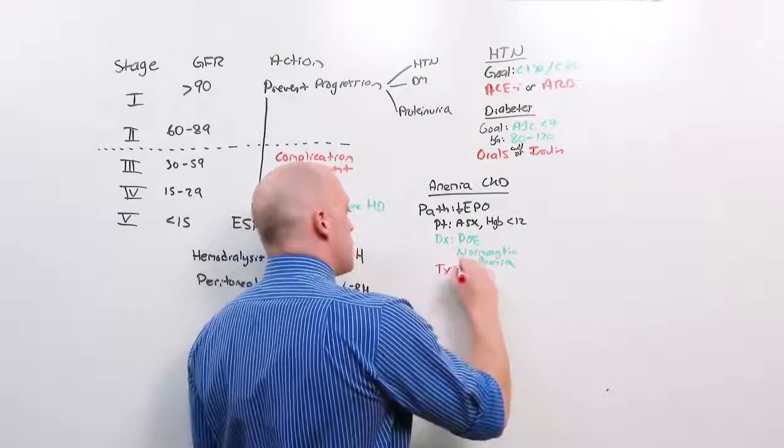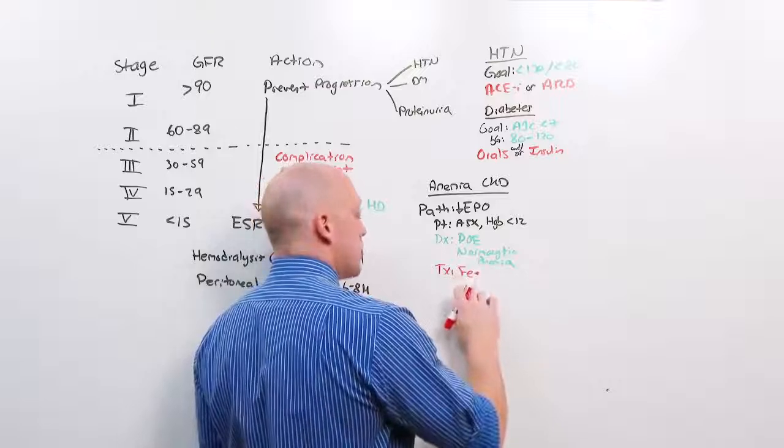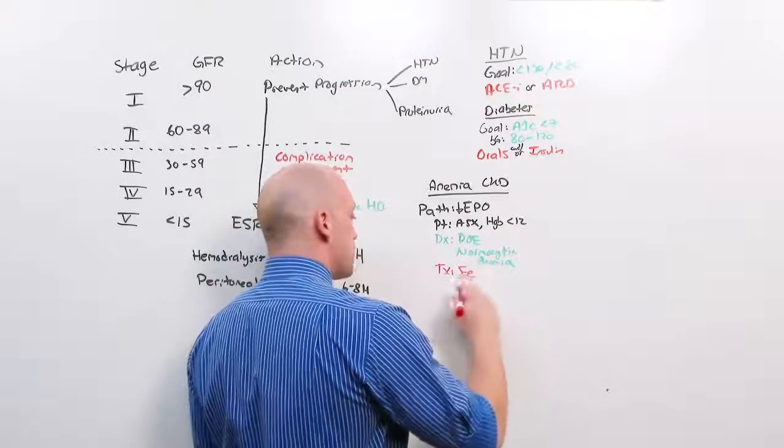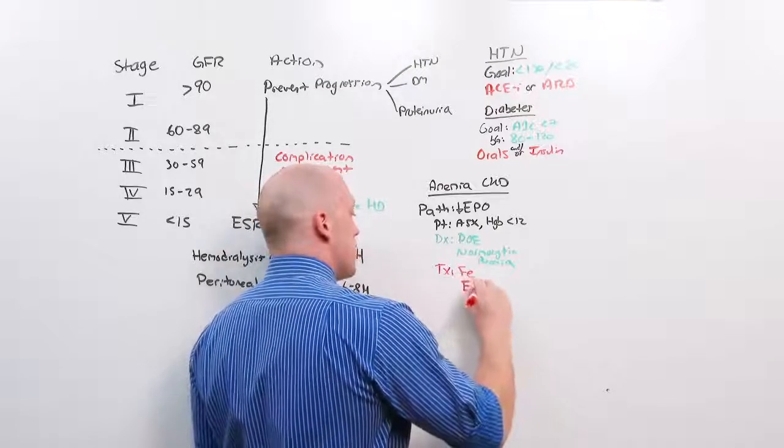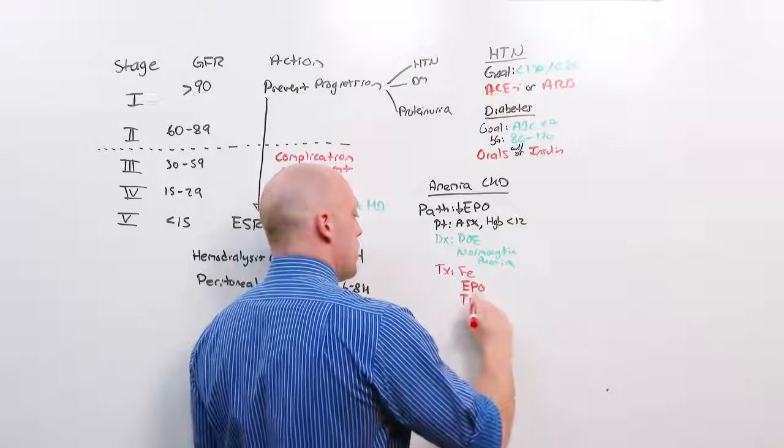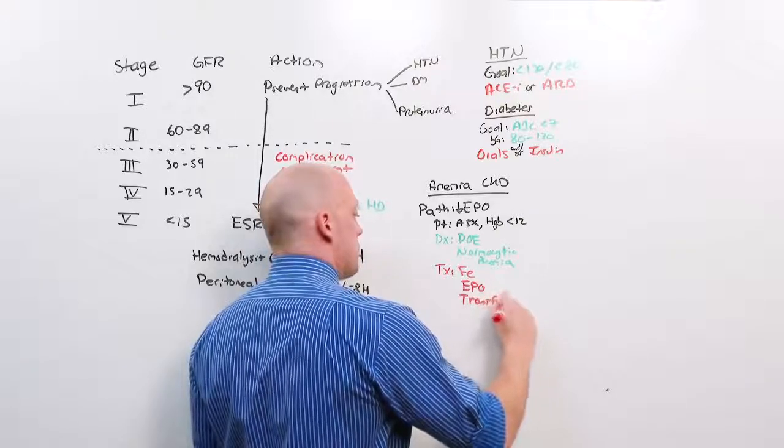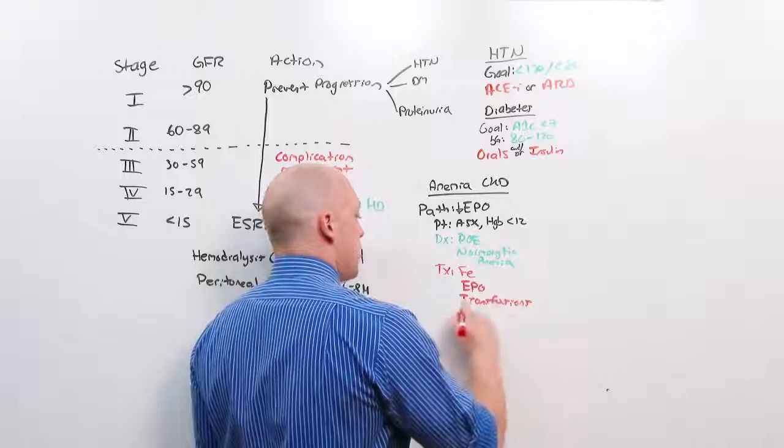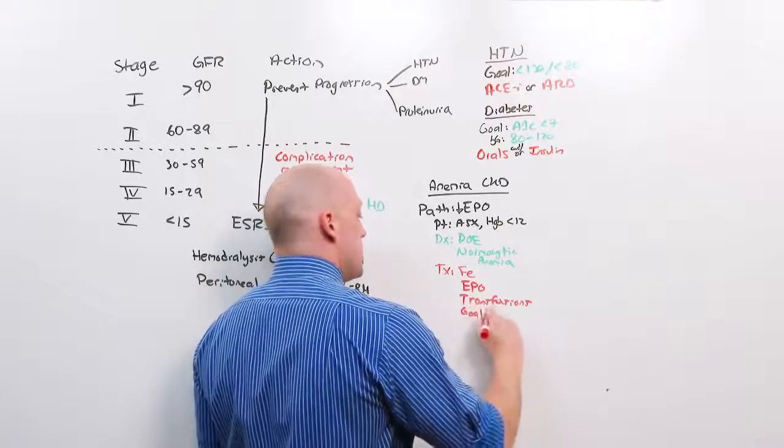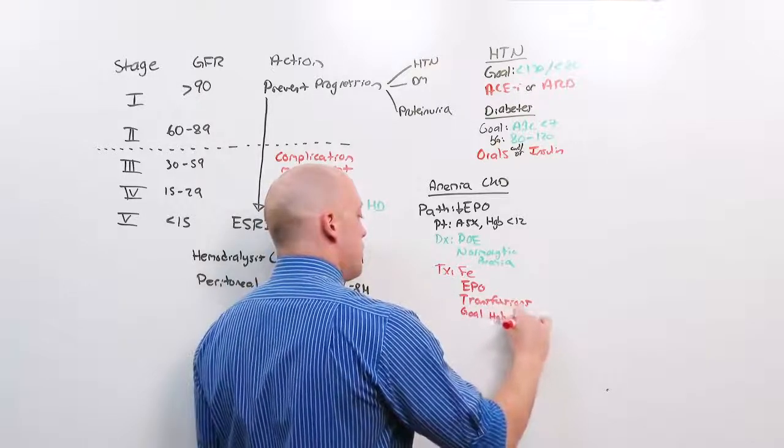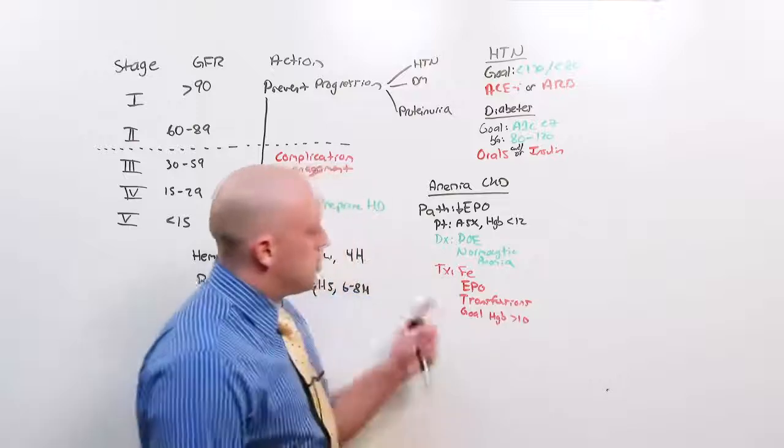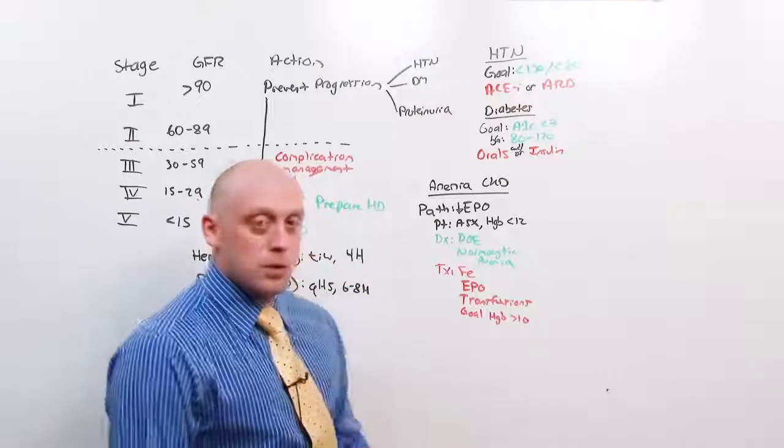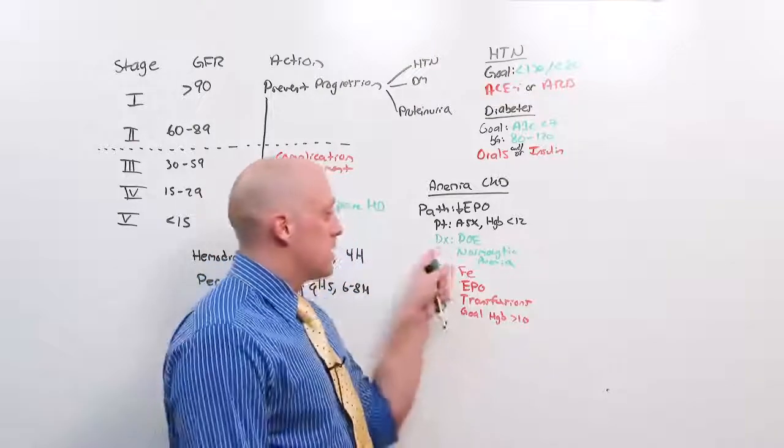Once you have anemia of chronic kidney disease, you're going to treat it with iron supplementation, sometimes intravenous, given with dialysis. You give them EPO, and every once in a while, they may need transfusions. The goal is a hemoglobin greater than 10.